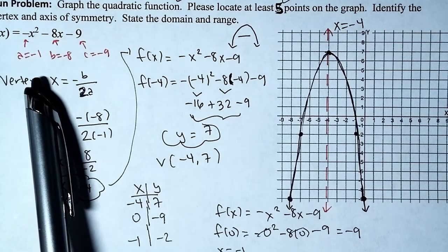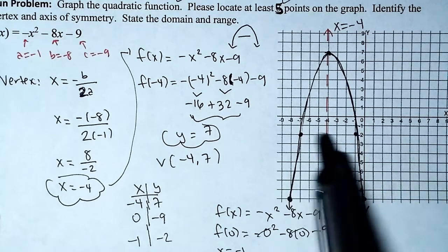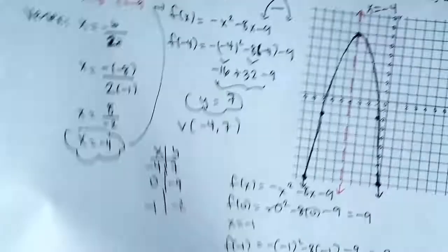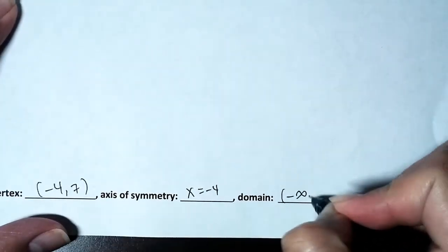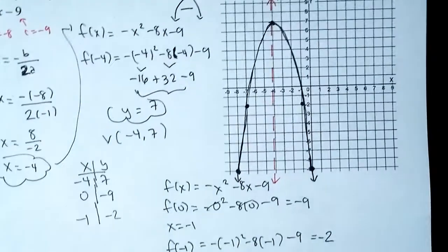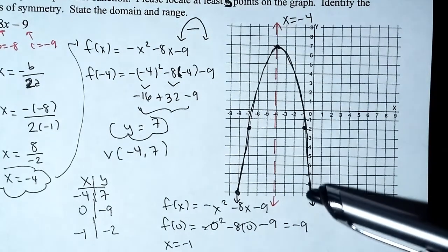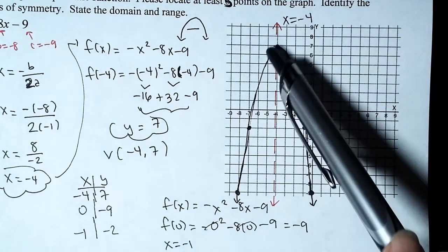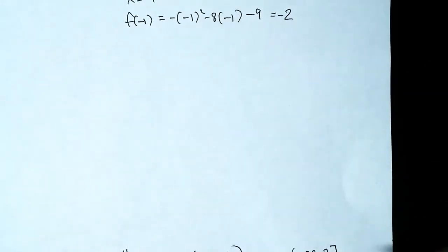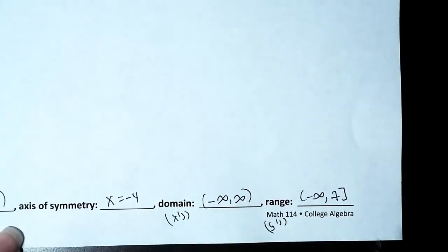For the domain: since it's a polynomial function, it goes from negative to positive infinity, and the graph confirms we're grabbing all x-values — so the domain is negative infinity to positive infinity. For the range: the parabola opens down, so the highest y-value is 7 at the vertex, and it goes down to negative infinity. The range is the interval from negative infinity to 7, where 7 is included. That covers everything — thanks guys!